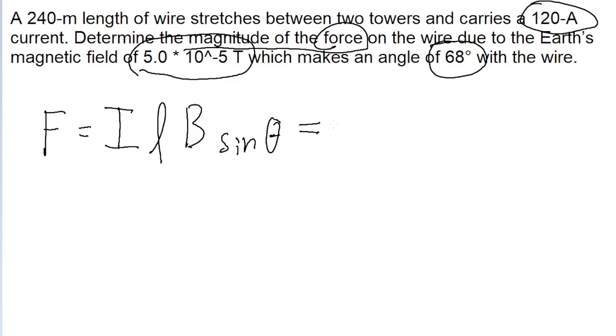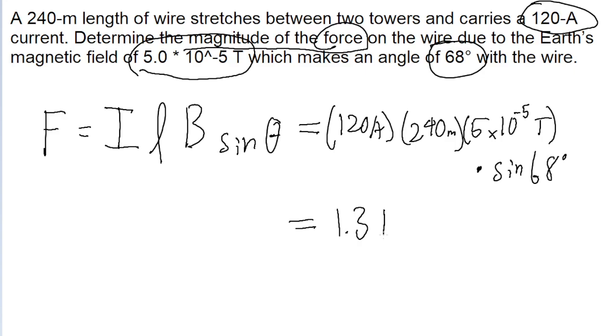This is pretty simple because we've been given all these variables, so it's just a matter of plugging it in. So the current is 120 amperes, the length is 240 meters, the magnetic field is 5 multiplied by 10 to the power of negative 5 teslas, and then multiply by the sine of the angle, which is 68 degrees. And if we put this into a calculator, then we find a force of 1.3 newtons.